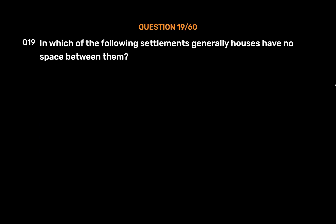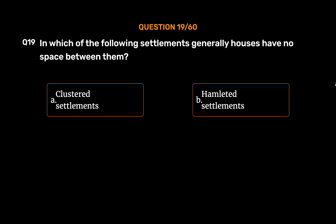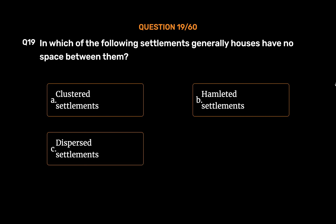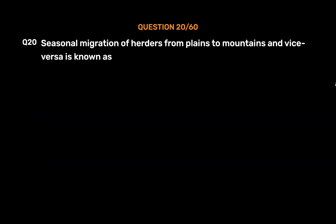Question number 19: In which of the following settlements do houses generally have no space between them? Option A: clustered settlements, option B: hamlet settlements, option C: dispersed settlements, option D: all of these. The correct answer is option A, clustered settlements. A clustered rural settlement is a compact or closely built-up area of houses. The houses in these settlements generally have no space between them, and the living place is distinct and separated from surrounding farms, barns, and pastures.